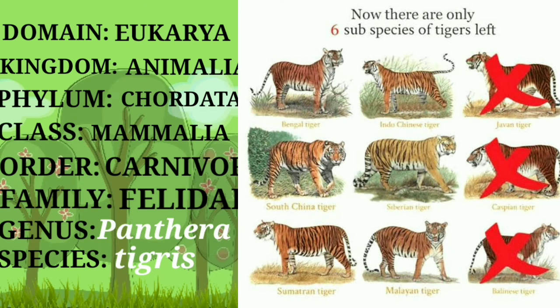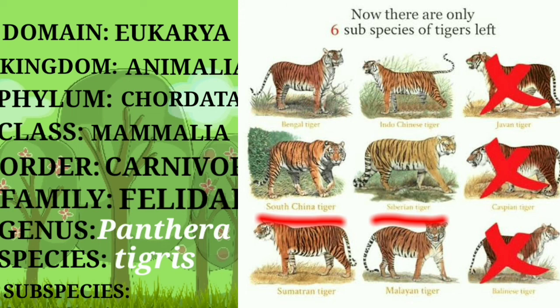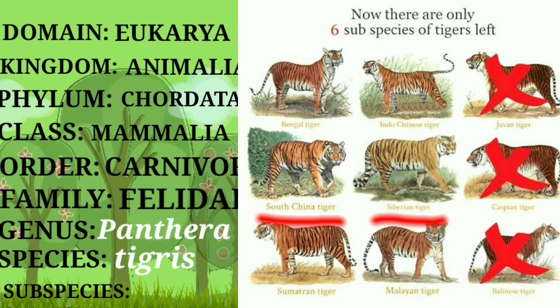For tigers, we consider Panthera tigris. In this species there are subspecies, of which many are now extinct. Panthera tigris altaica is the Siberian Tiger, Panthera tigris amoyensis is the South China Tiger, and Panthera tigris tigris is the Royal Bengal Tiger. That's all for today. For the next video on introduction of parasitism, please like and subscribe to the channel.